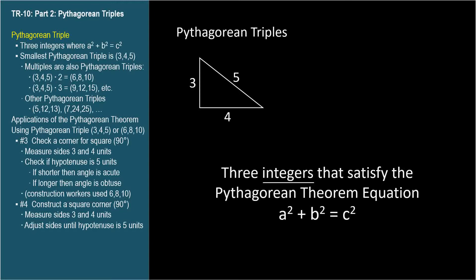The simplest Pythagorean triple having the lowest integers is three, four, and five, because three squared plus four squared equals five squared, or nine plus sixteen equals twenty-five.